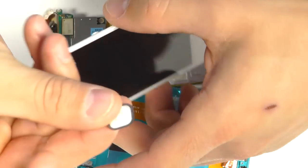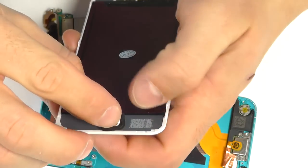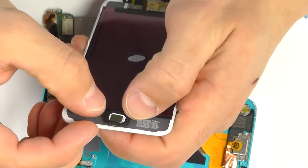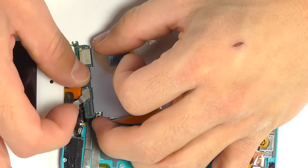Now before installing our new display assembly, let's not forget to transplant our home button from our original broken display assembly onto our new replacement part. With our home button securely in place, we can now continue.